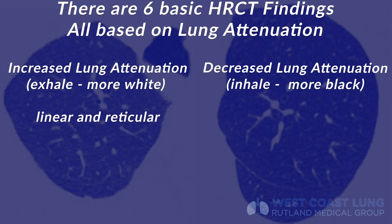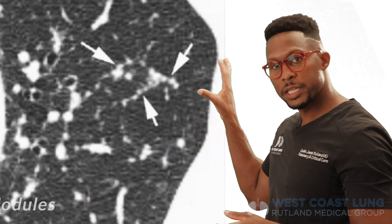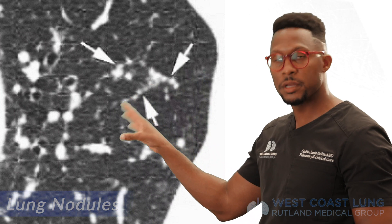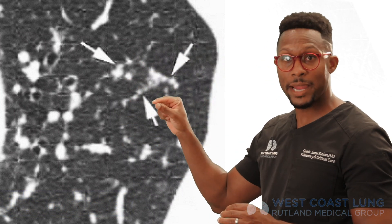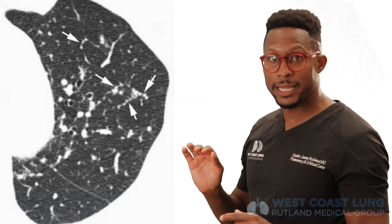The second finding is nodules or nodular opacities. A nodule is any well-circumscribed soft tissue that is three centimeters or less in size. If it's three centimeters or more, we call it a lung mass; if it's less, it's a lung nodule. When you look at the nodules on this CAT scan, these nodules are not only well-circumscribed and less than three centimeters, but they're also located on the interlobular septa — so we call these interstitial nodules. You can go to your attending and say: I see well-circumscribed interstitial nodules on this CAT scan of the lung.